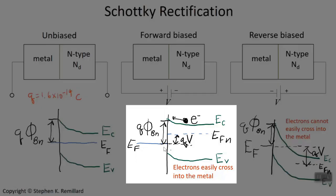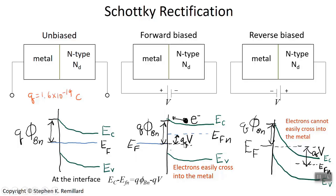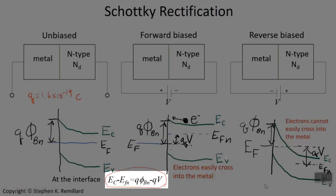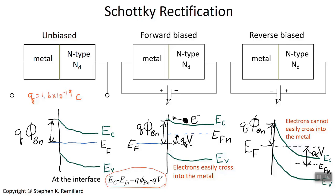Consider the energy difference at the interface between the conduction band edge and the quasi-Fermi level. This equals the Schottky barrier potential energy minus the applied potential energy: E_c − E_Fn = q·φ_bn − q·V. This will become a working equation we use to derive the Schottky diode I-V relation. We reasoned this by looking at values at the interface, so that is technically where it is valid — and that's fine, because the interface is a well-defined place with well-defined quantities.